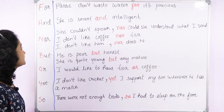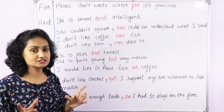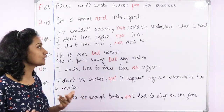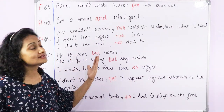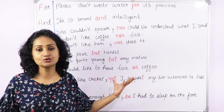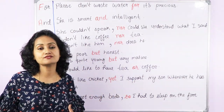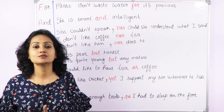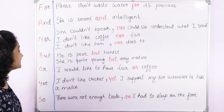Next is 'and.' And connects two words — we all know that. For example: 'She is smart and beautiful,' 'I want to have bread and butter.' This is how we use 'and.'